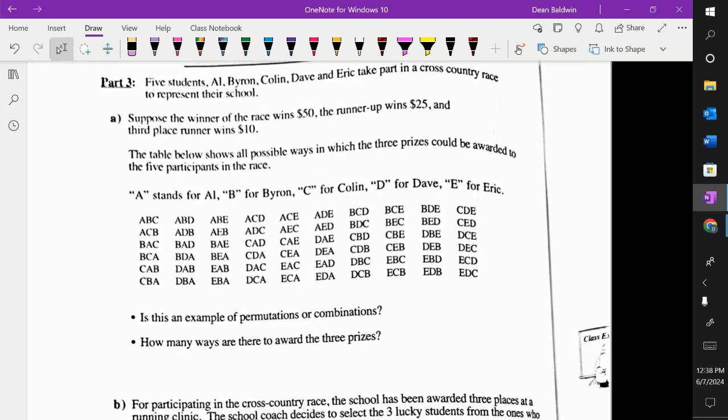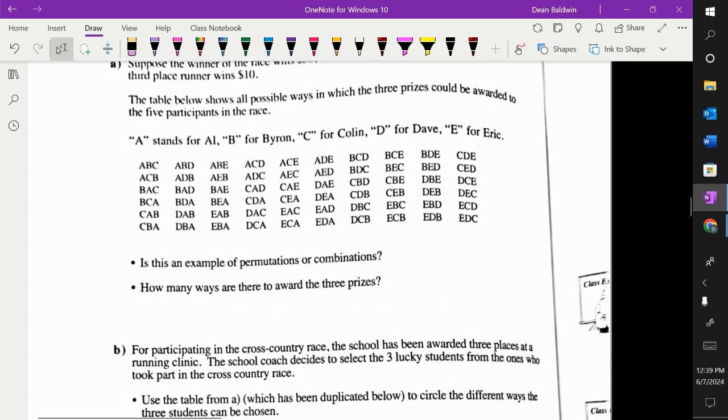We're going to look at this. So we have a cross-country race. The winner of the race gets $50. The runner-up gets $25, and third place gets $10. Is this permutations or combinations, this question? Does the order matter or does the order not matter? Does the order matter? Why? Because they're going to get different prizes. Yes. Because you get different prizes, the order you win or the order you come in matters. So this is a permutation.